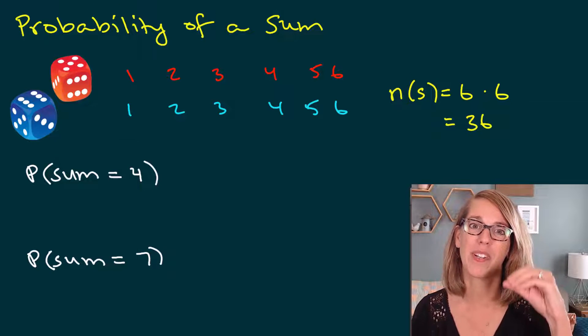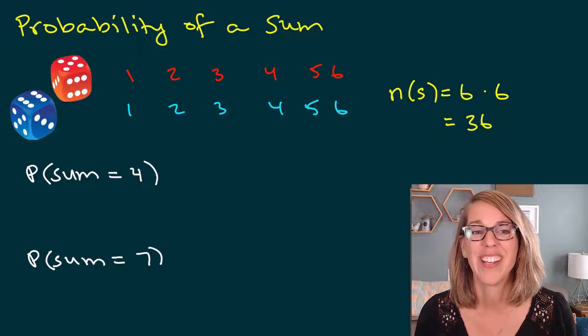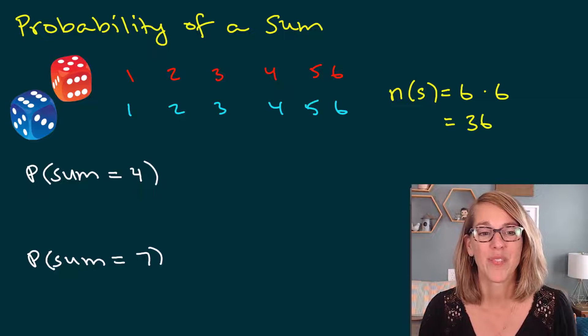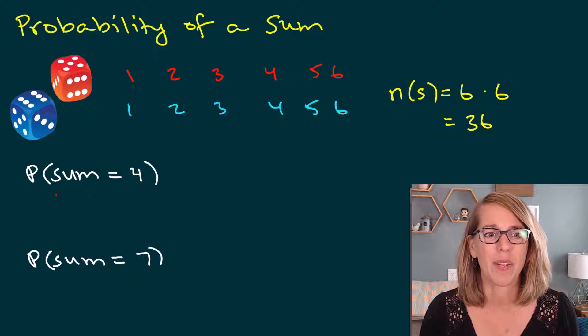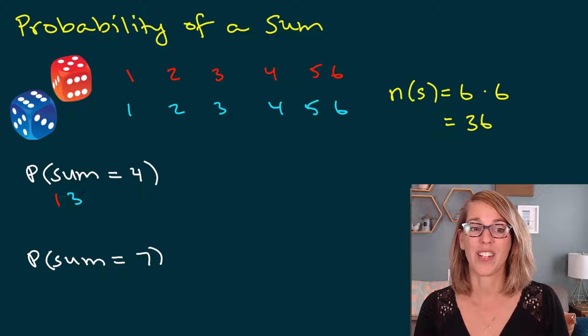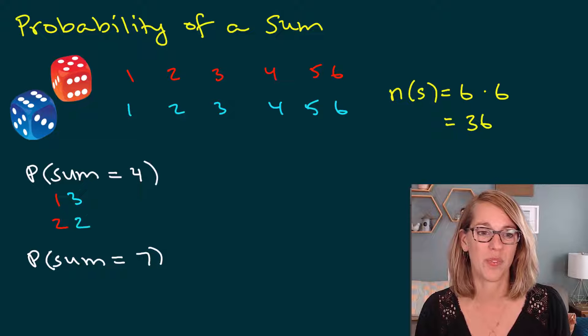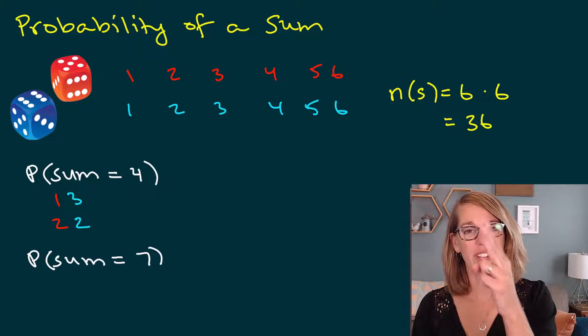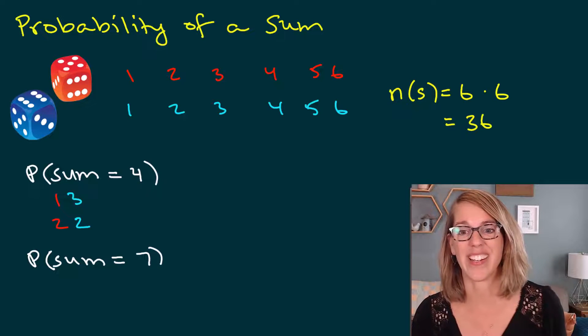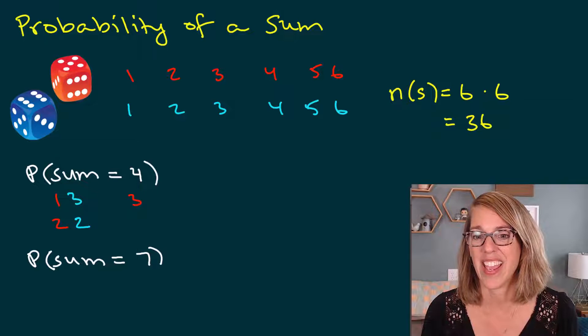To come up with our sums, I want to put a number on the red dice together with a number on the blue dice to come up with some pairs. So if I want to add to four, I'm going to pair a one with a three. I could also pair a two with a two. And then that one and three can also be swapped, a three and a one.